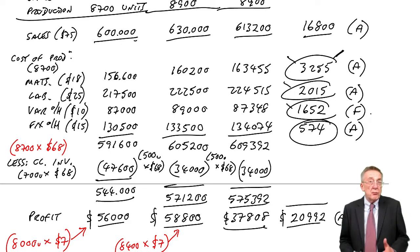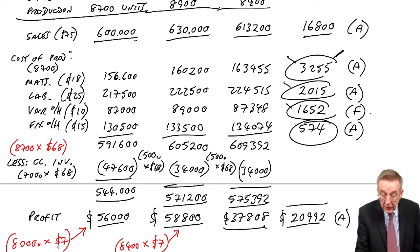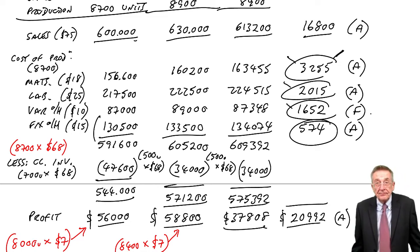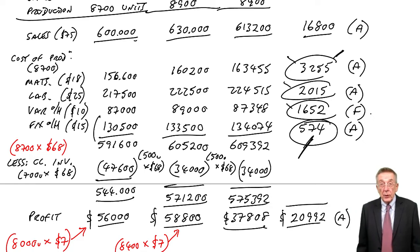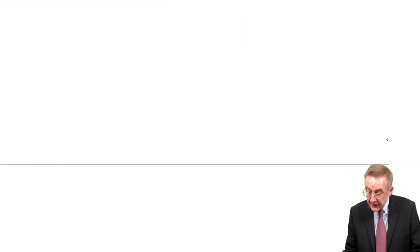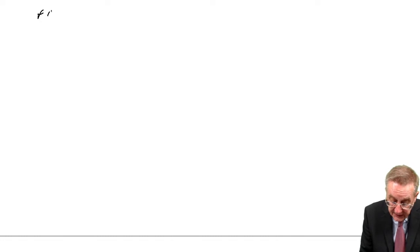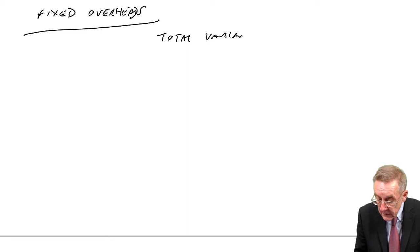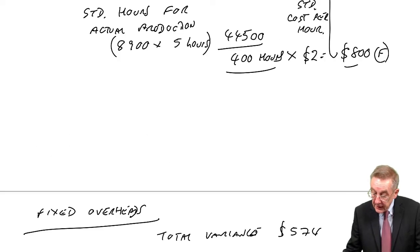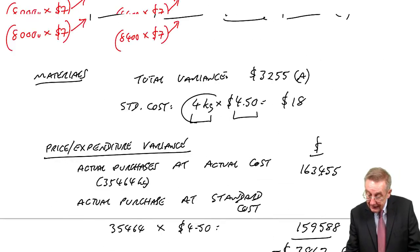So we had flexed them, even though really they should have stayed at the original $130,500. Fixed overheads shouldn't change at all. But thanks to this flexing business, we've ended up having to explain a difference of $574.